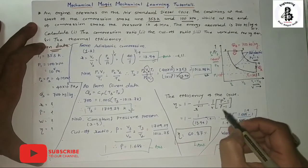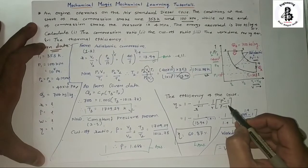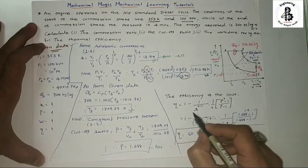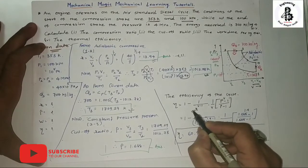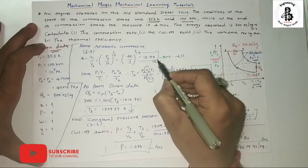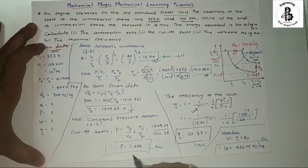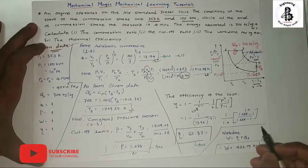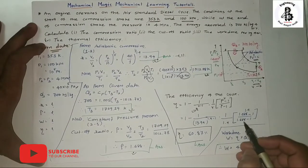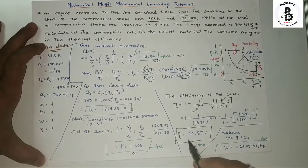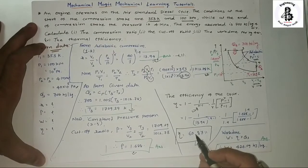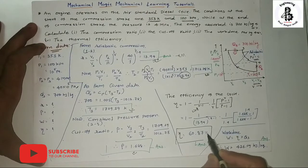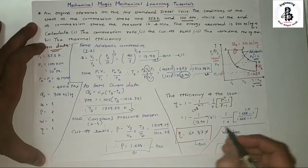The thermal efficiency of the Diesel cycle is: η = 1 − (1/r^(γ−1)) × (ρ^γ − 1) / (γ × (ρ − 1)). Substituting r = 13.94, ρ = 1.688, and γ = 1.4, the thermal efficiency is 60.87%. That is answer number 4.